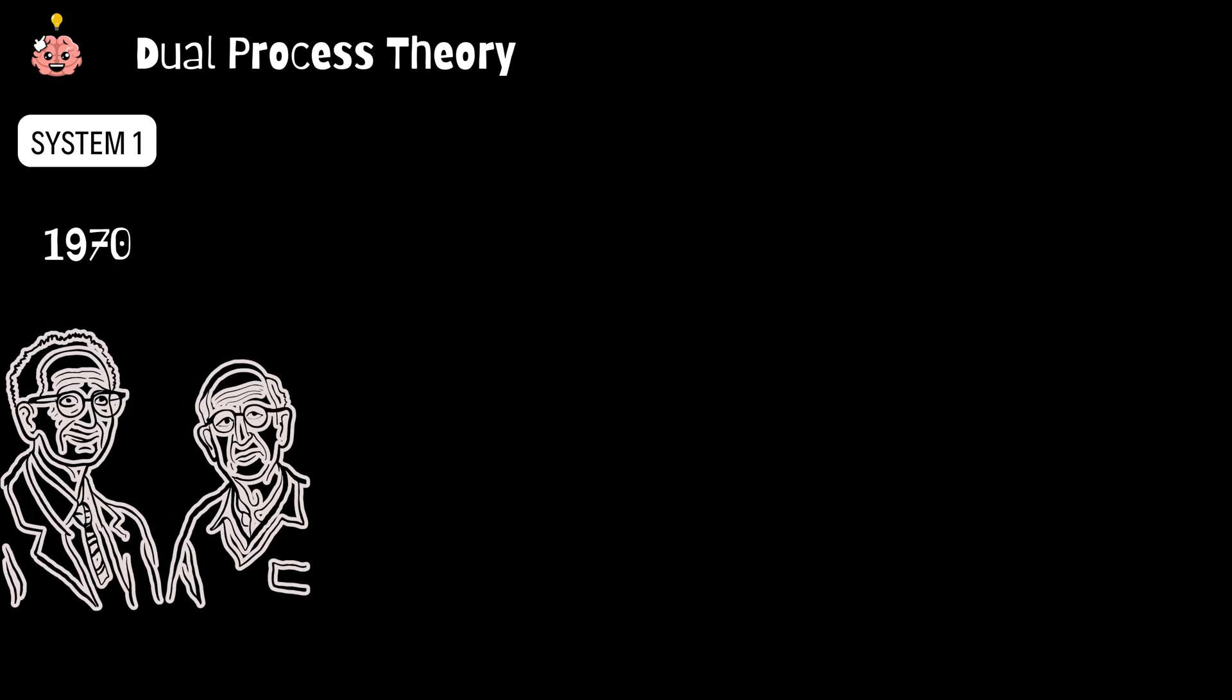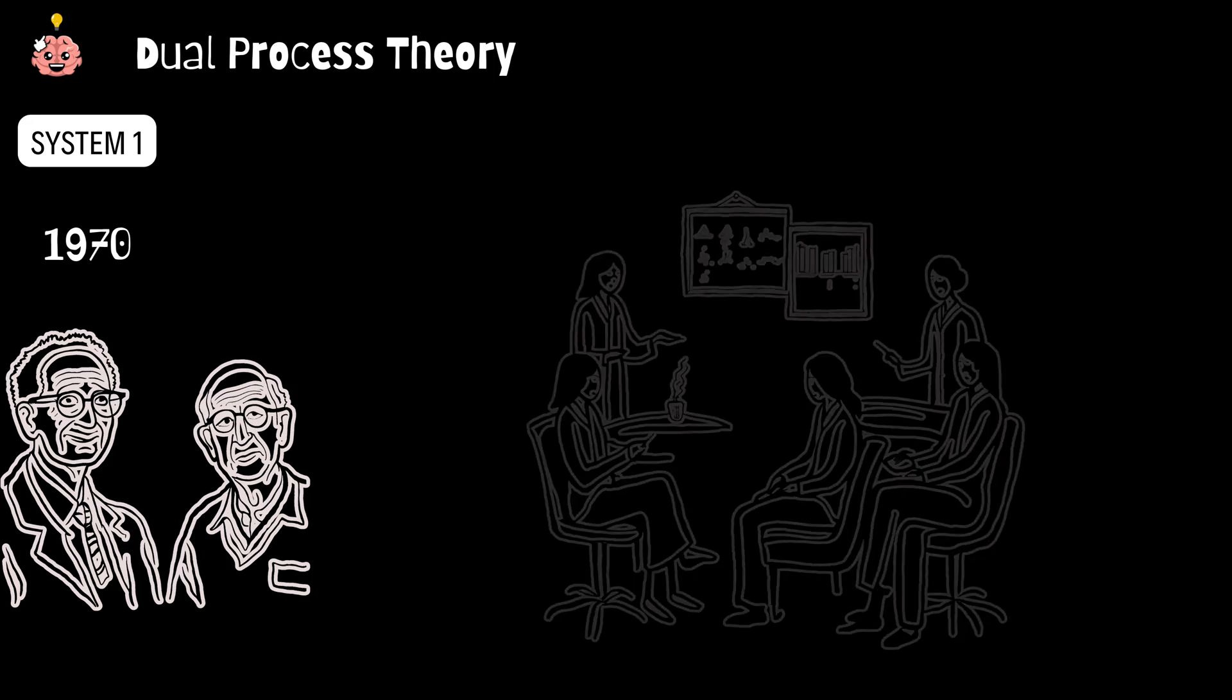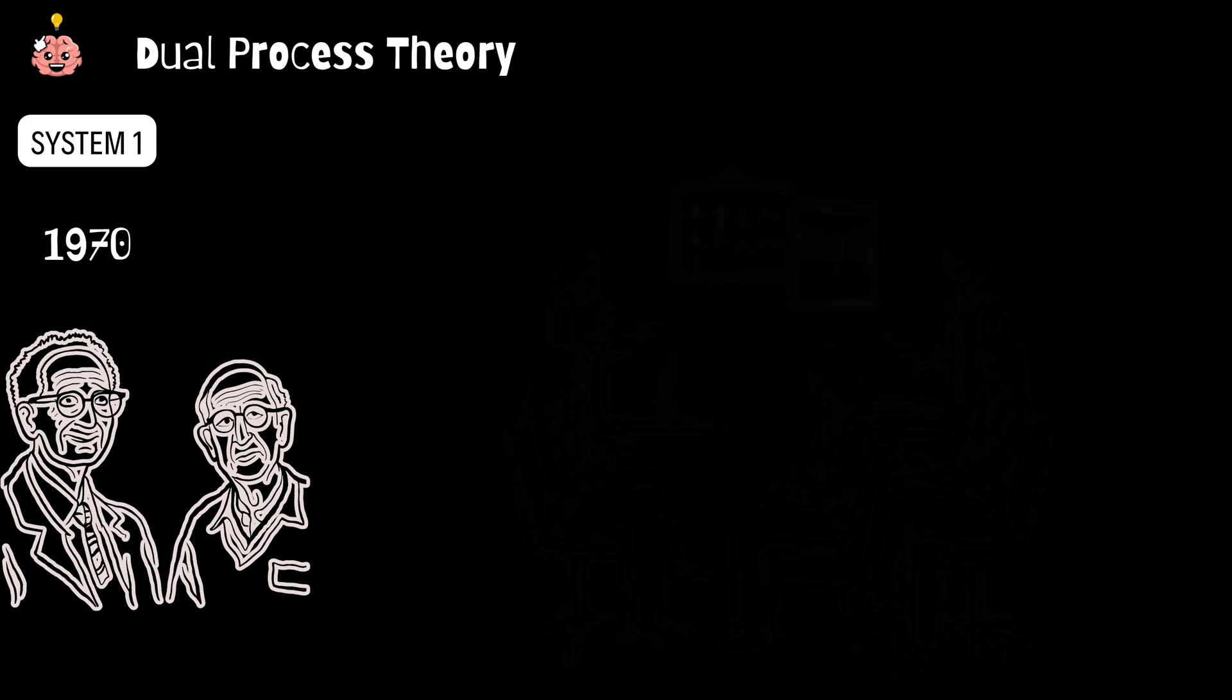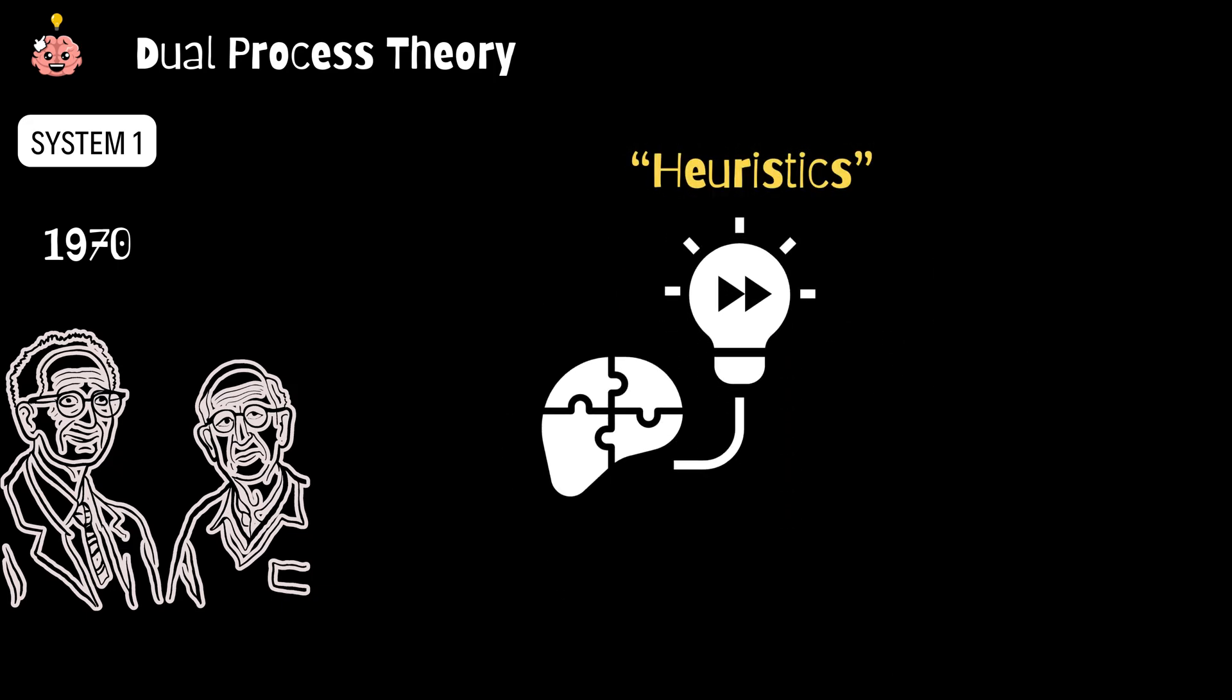Here's a classic system one moment. In the 1970s, Amos Tversky and Daniel Kahneman, two psychologists, ran a series of studies on how people make snap judgments. They found that we use mental shortcuts or heuristics to make decisions fast. For example, they asked people,